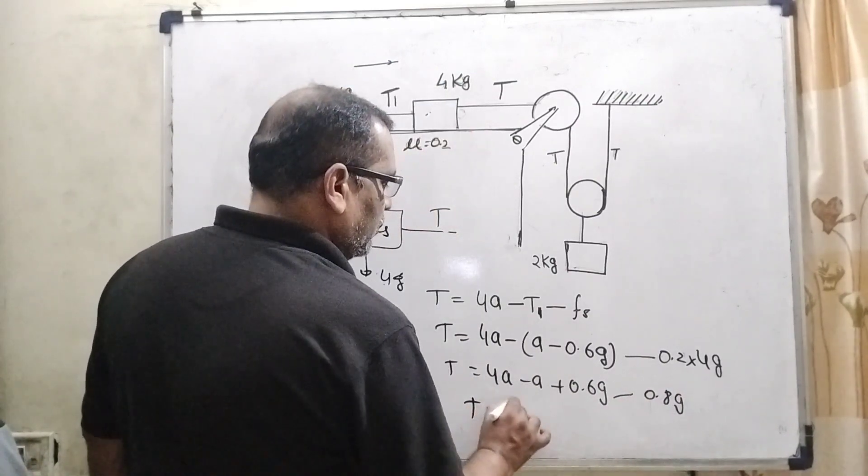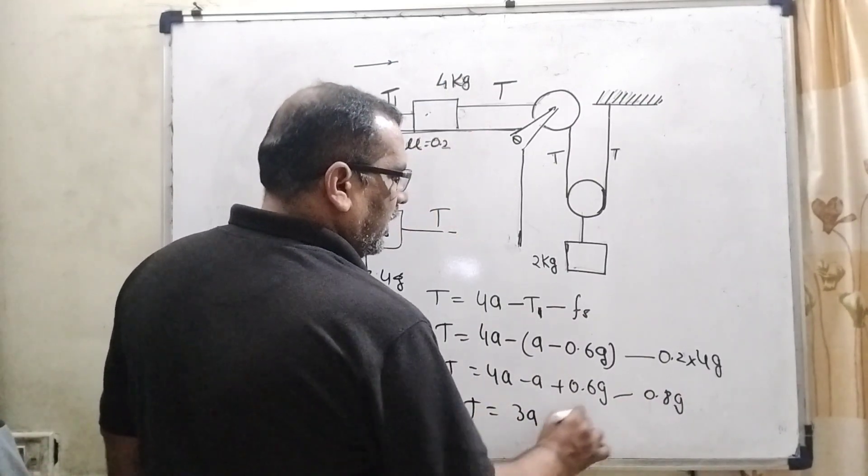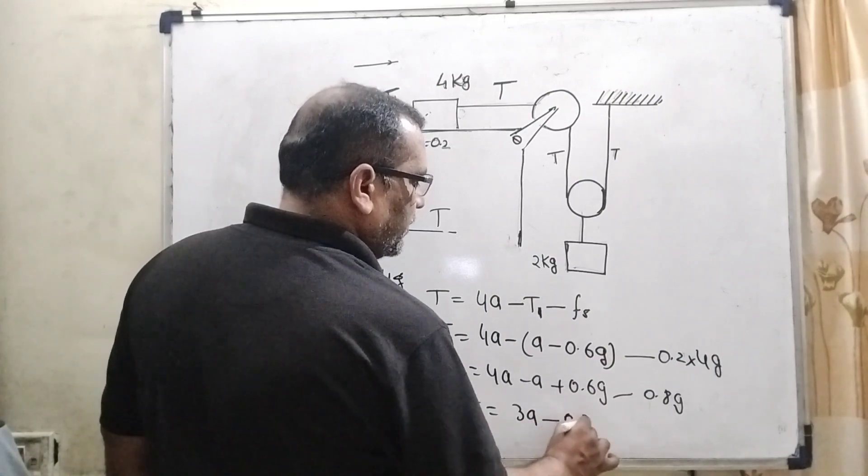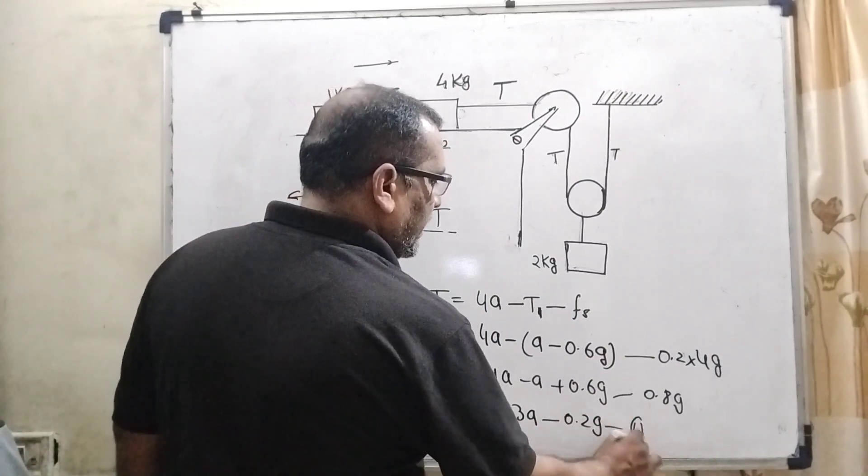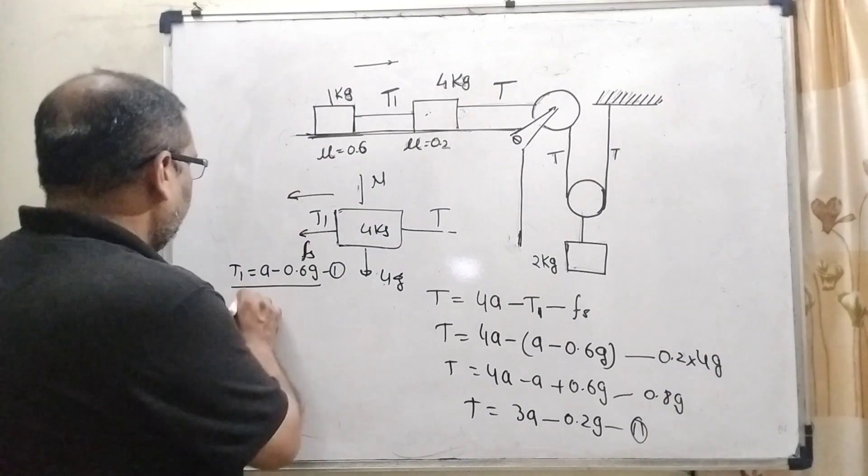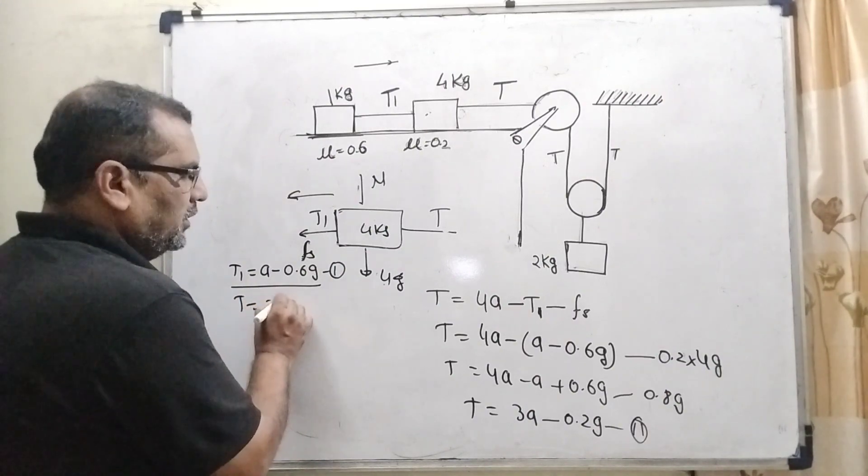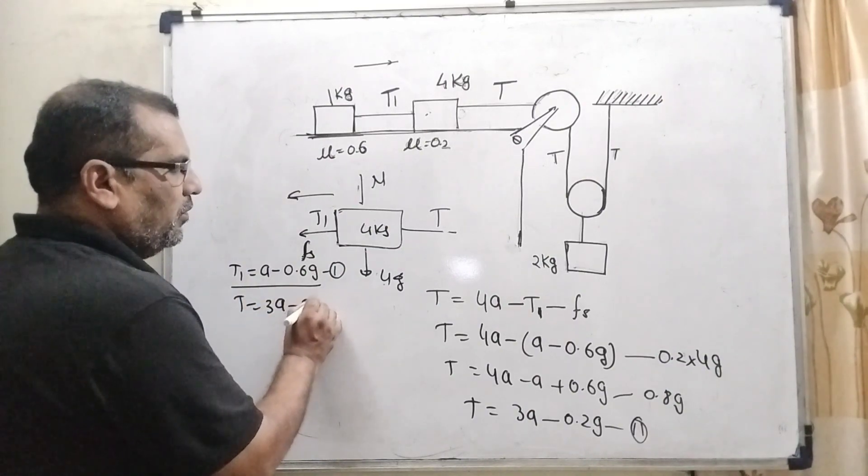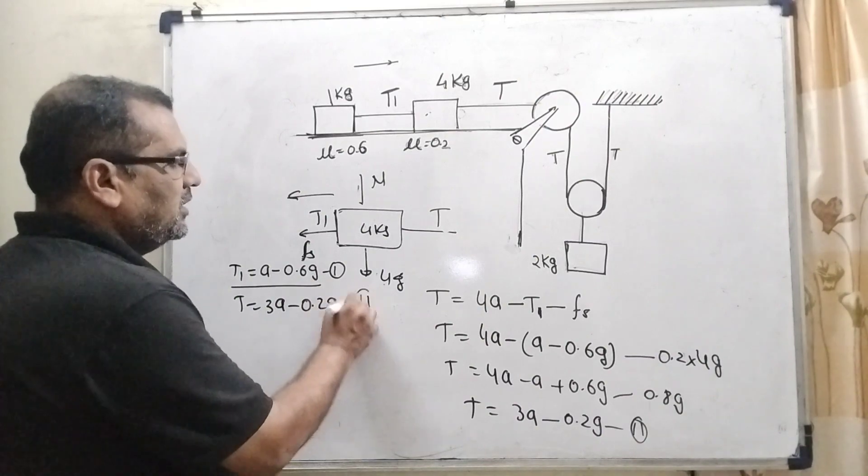So here T equal to 3a and minus 0.2 g that is the second equation. So here we have written T equal to 3a minus 0.2 g it is the second equation.